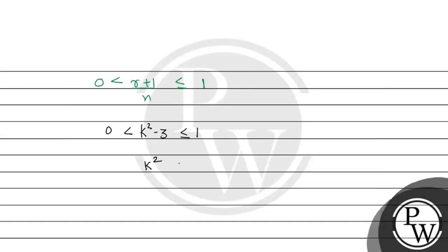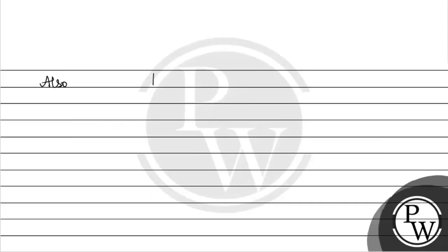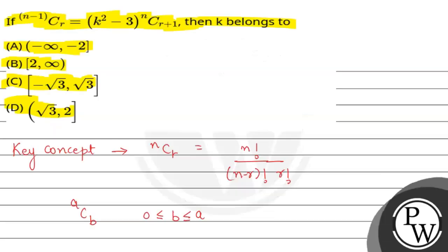From this, k is less than or equal to 2 but greater than root 3, and also k is greater than or equal to minus 2 but less than or equal to minus root 3. Hence k belongs to (root 3, 2] and also k belongs to [-2, -root 3). So the correct option is D. Best of luck!